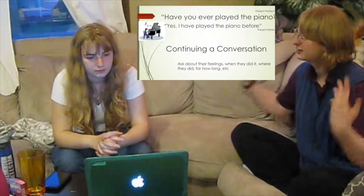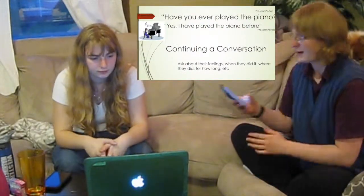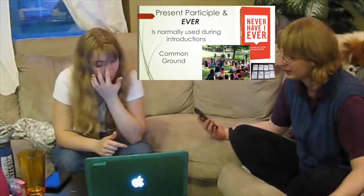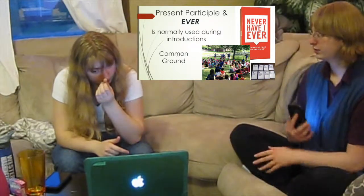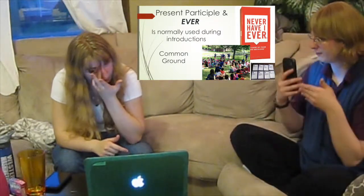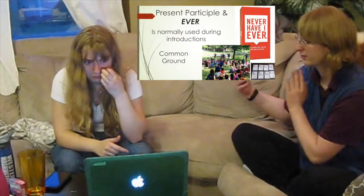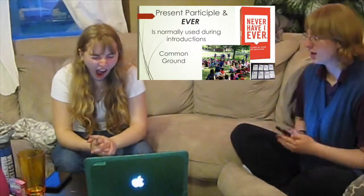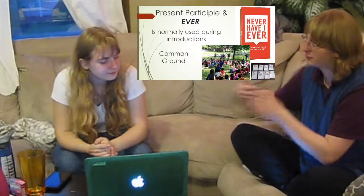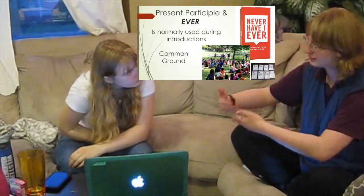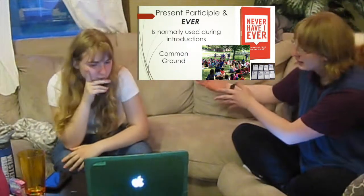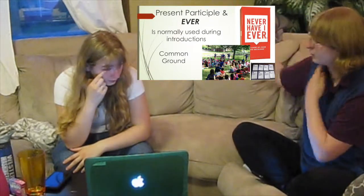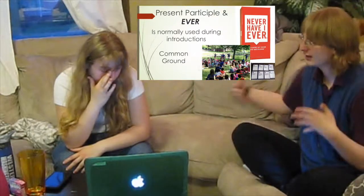Before we do that, I want to talk about what the present perfect is used for in context. Using 'ever' with the past participle — the present perfect — is used for introductions. It's when you want to find common ground between people. Have you seen this? Have you done this? I've done that thing. It's for connecting people. Very commonly, if you're in a group activity when introducing new teammates, you'll play a game called Never Have I Ever.